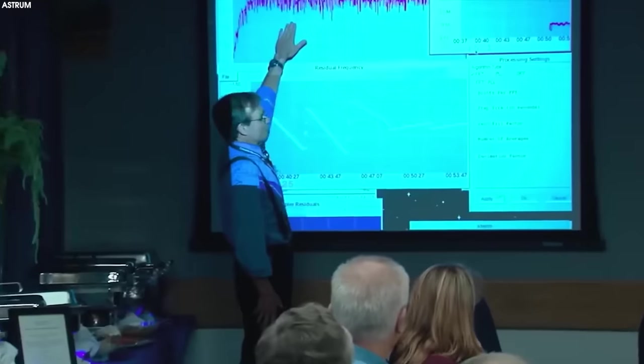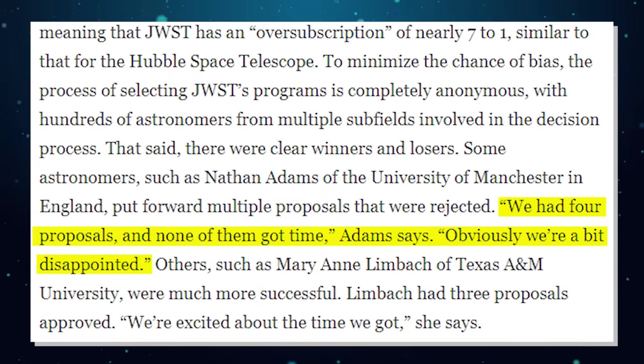Some astronomers, such as Nathan Adams of the University of Manchester in England, put forward multiple proposals that were ultimately rejected. We had four proposals, he said, and none of them got time. Obviously, we're a bit disappointed. Others, such as Marianne Leimbach of Texas A&M University, were much more successful. Leimbach had three proposals approved. We're excited about the time we got, she said.